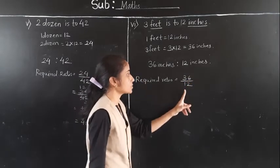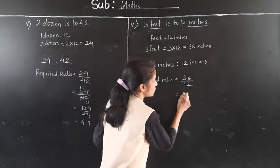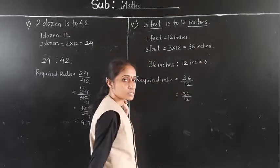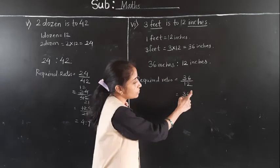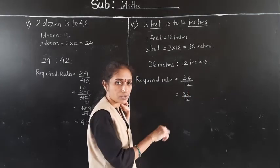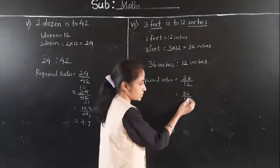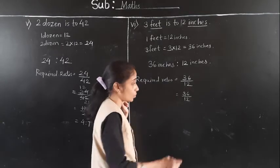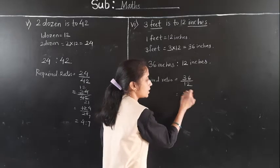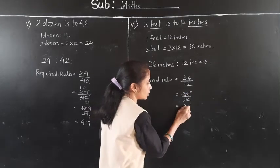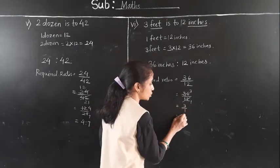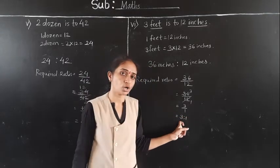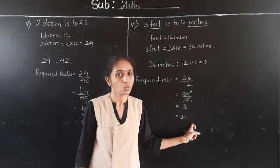36 upon 12: both are divisible by 12. 12 ones are 12, 12 threes are 36. So we get 3 upon 1. The ratio is 3 to 1.